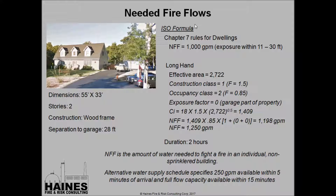The ISO needed fire flow formula has been around for quite a while. For dwellings, it has a simplified table where you look at your dwelling, measure the distance between your buildings, and pick your flow rate. In this case we come up with 1,000 GPM because we have an exposure within 11 to 30 feet of our building. You can also do it longhand, which requires calculating the effective area, construction class, occupancy class, exposure factor, and communication factor — arriving at about 1,250 GPM. The longhand doesn't get much different than the shortcut method.